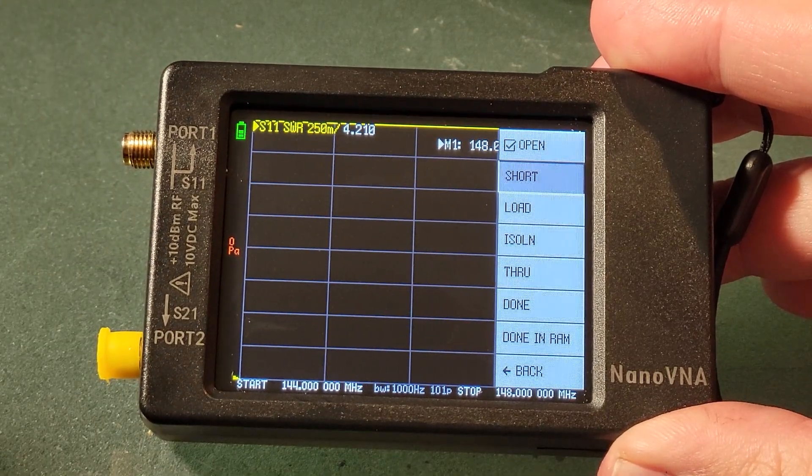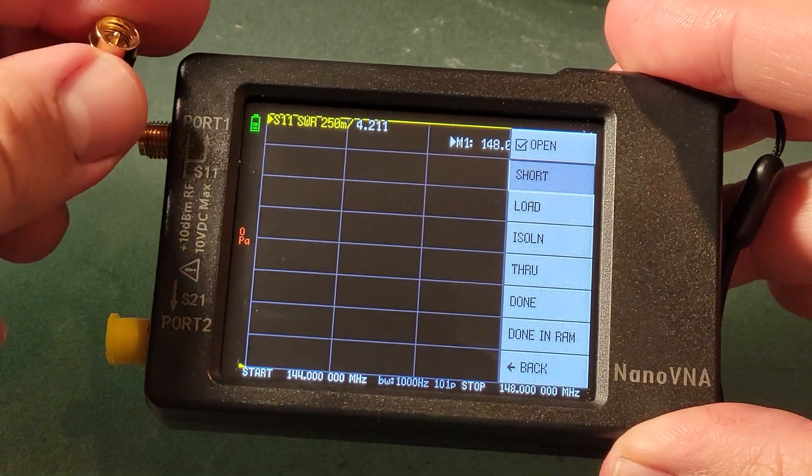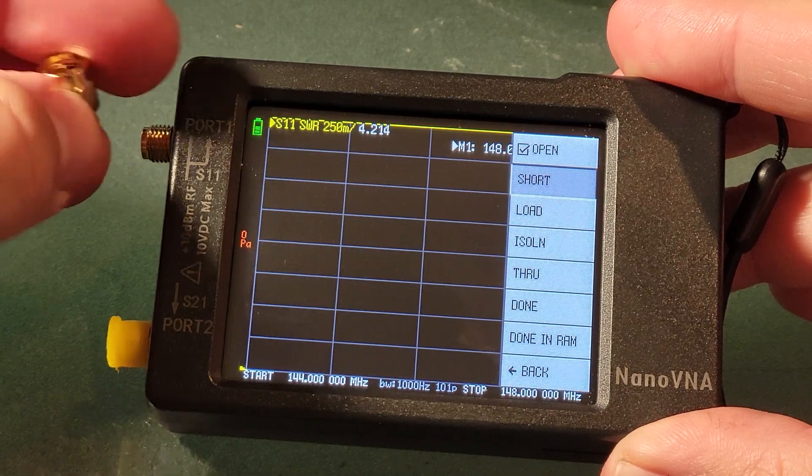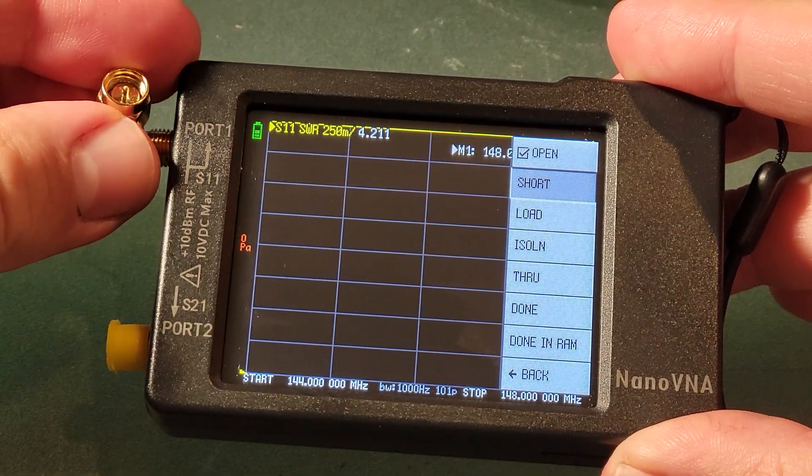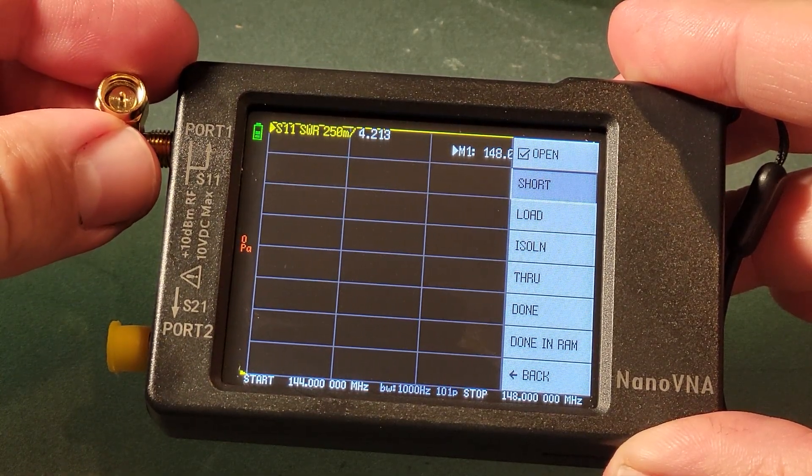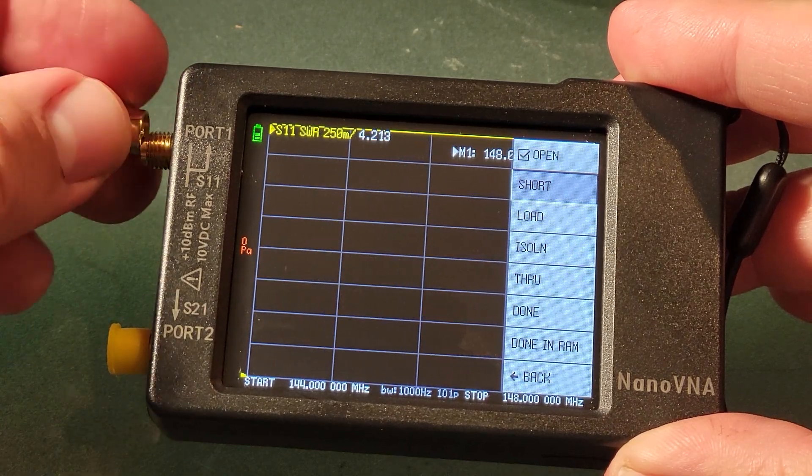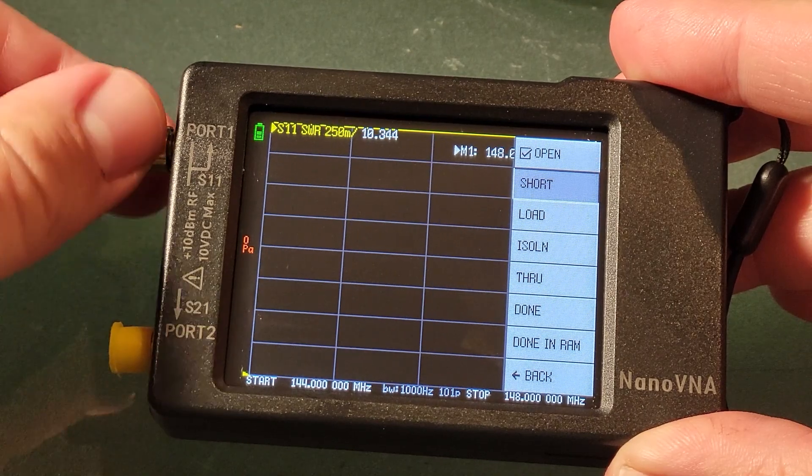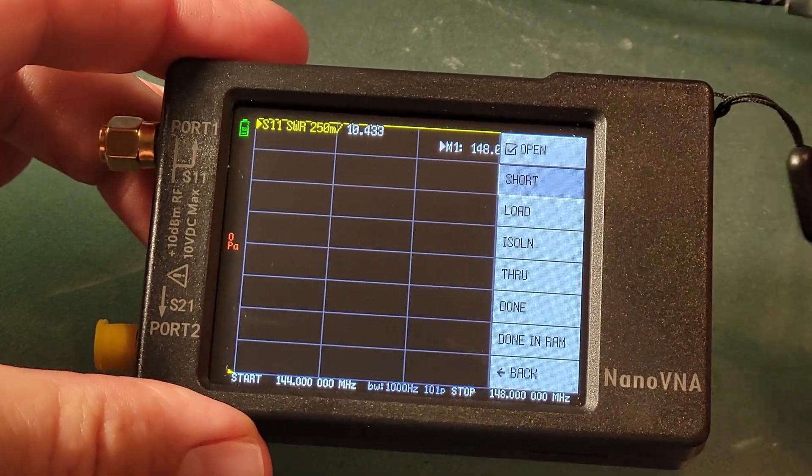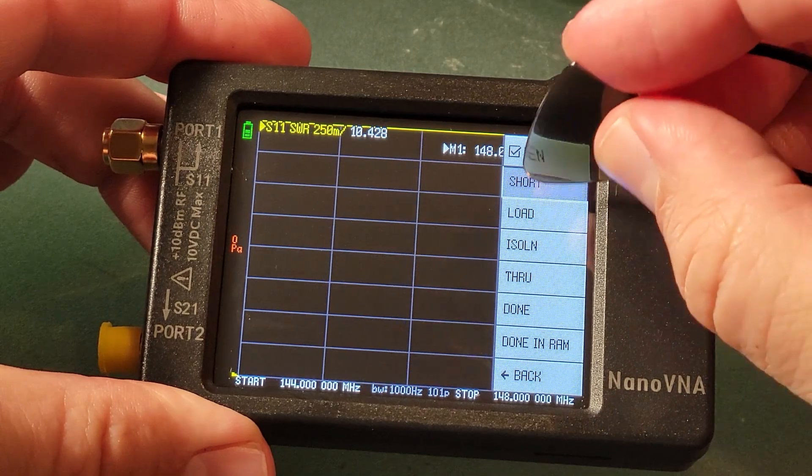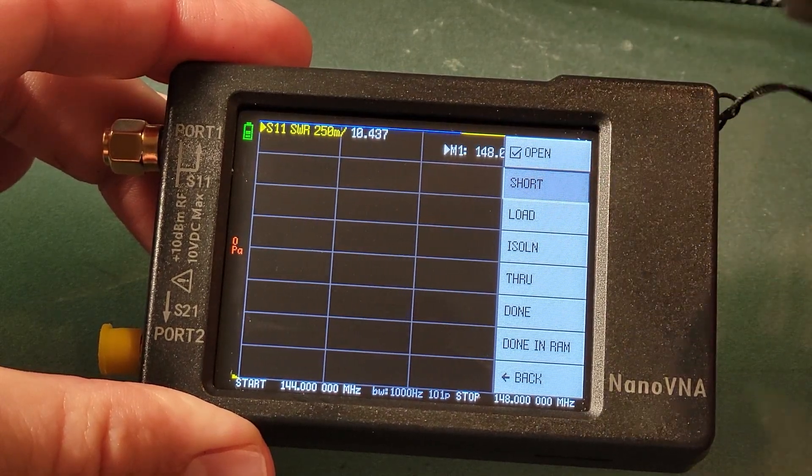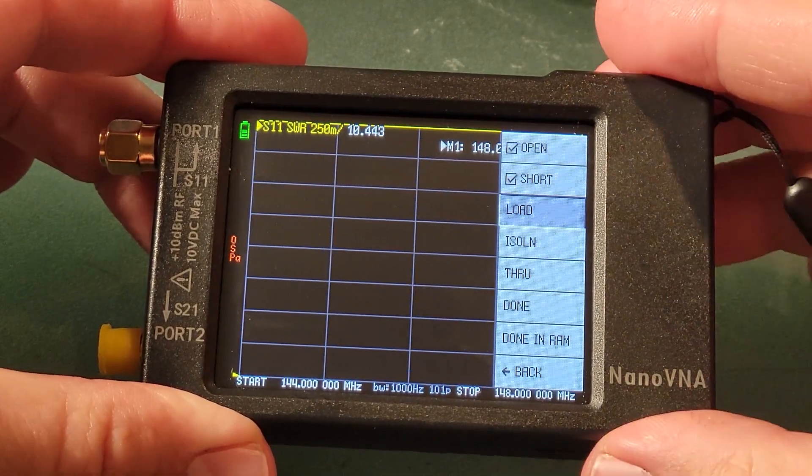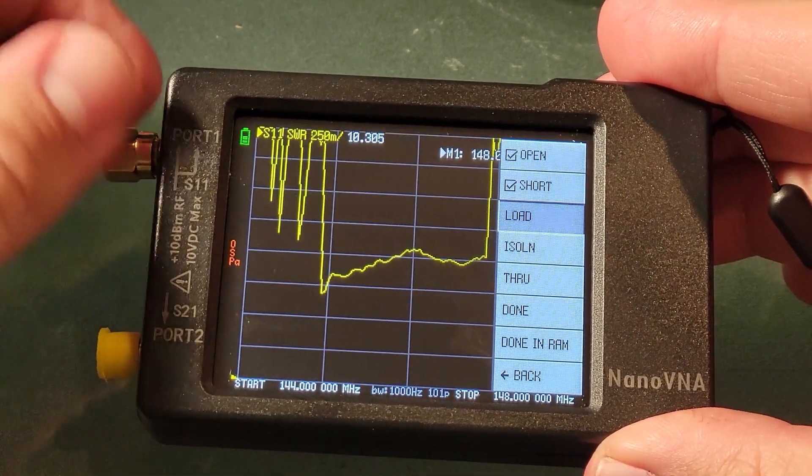And we'll go on to our next which is the short. It is a cap that looks just like the other except that it has a pin in the center there. That's our short. So we'll go ahead and thread that on there. Look at that we got some lines jumping around as we get that threaded into place. And again we'll watch the very top there for progress bar as we tap the short. And now that portion is complete.